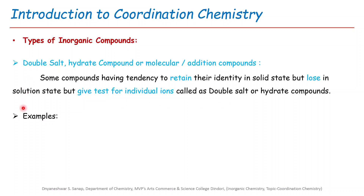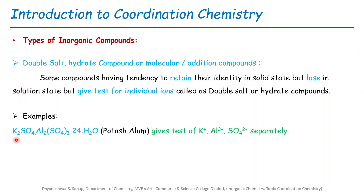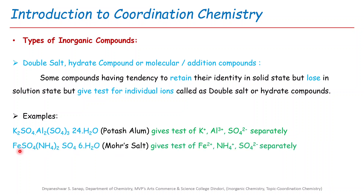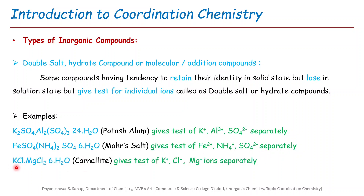An example of such compounds is Potash alum: K₂SO₄·Al₂(SO₄)₃·24H₂O. It gives individual tests for K⁺, Al³⁺, and SO₄²⁻ ions separately. Similarly, Mohr's salt — FeSO₄·(NH₄)₂SO₄·6H₂O — gives tests for Fe²⁺, NH₄⁺, and SO₄²⁻ ions separately. The third example is Kainalite, with molecular formula KCl·MgCl₂·6H₂O, which gives tests for K⁺, Cl⁻, and Mg²⁺ ions separately.